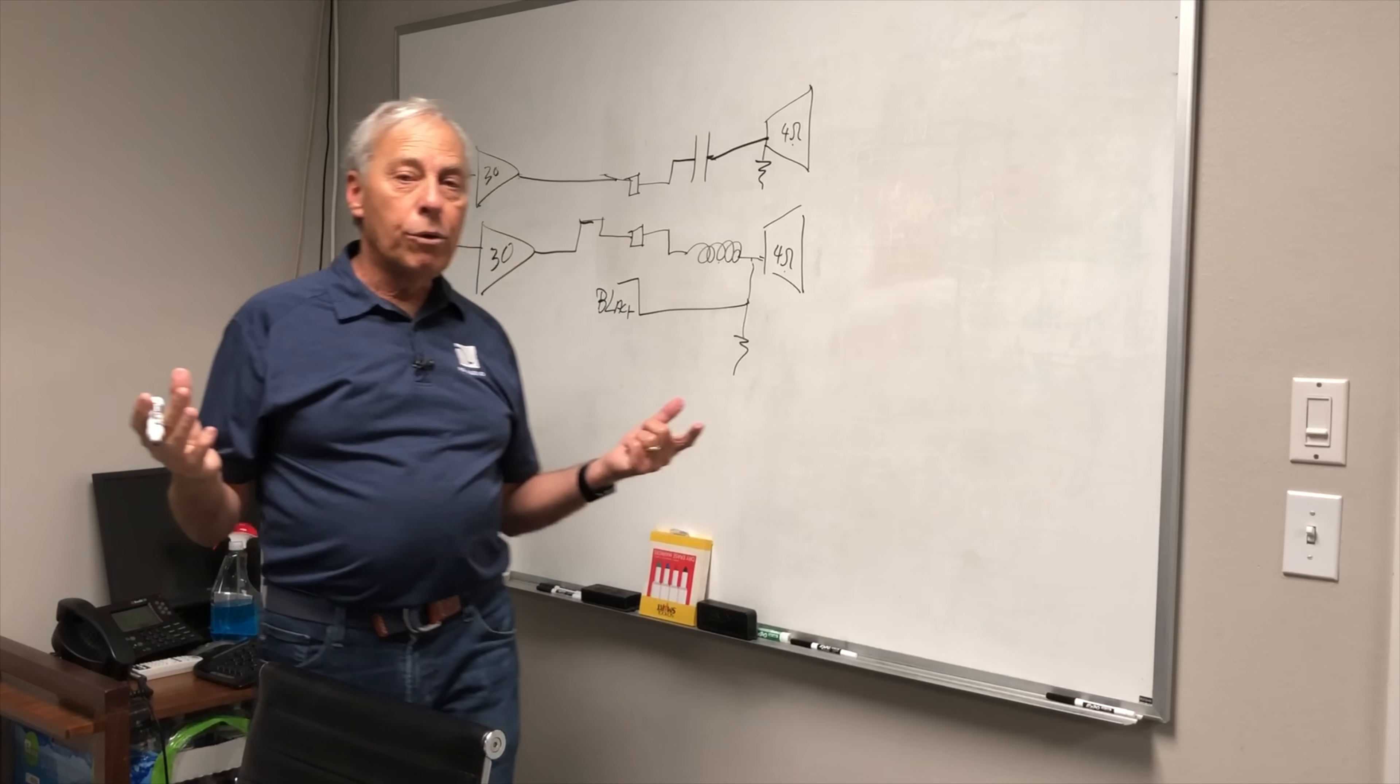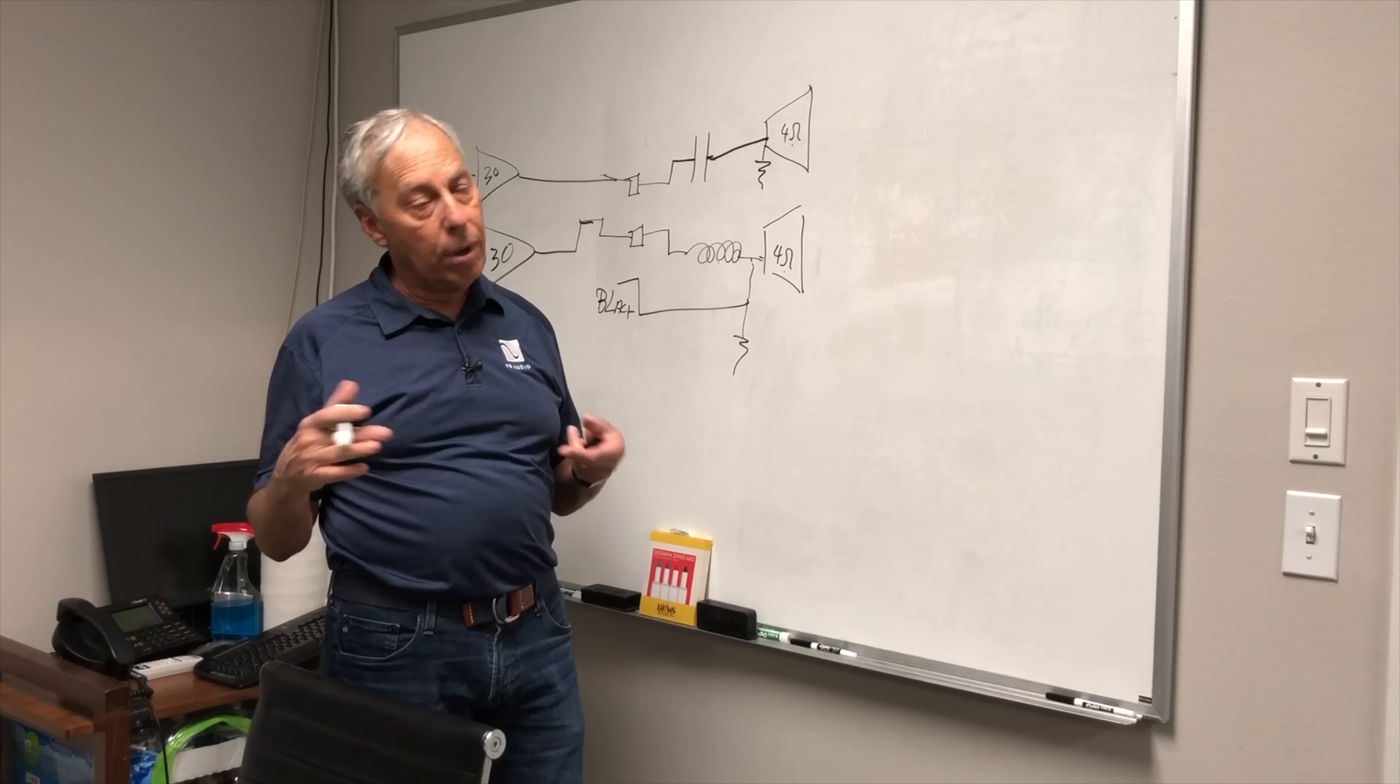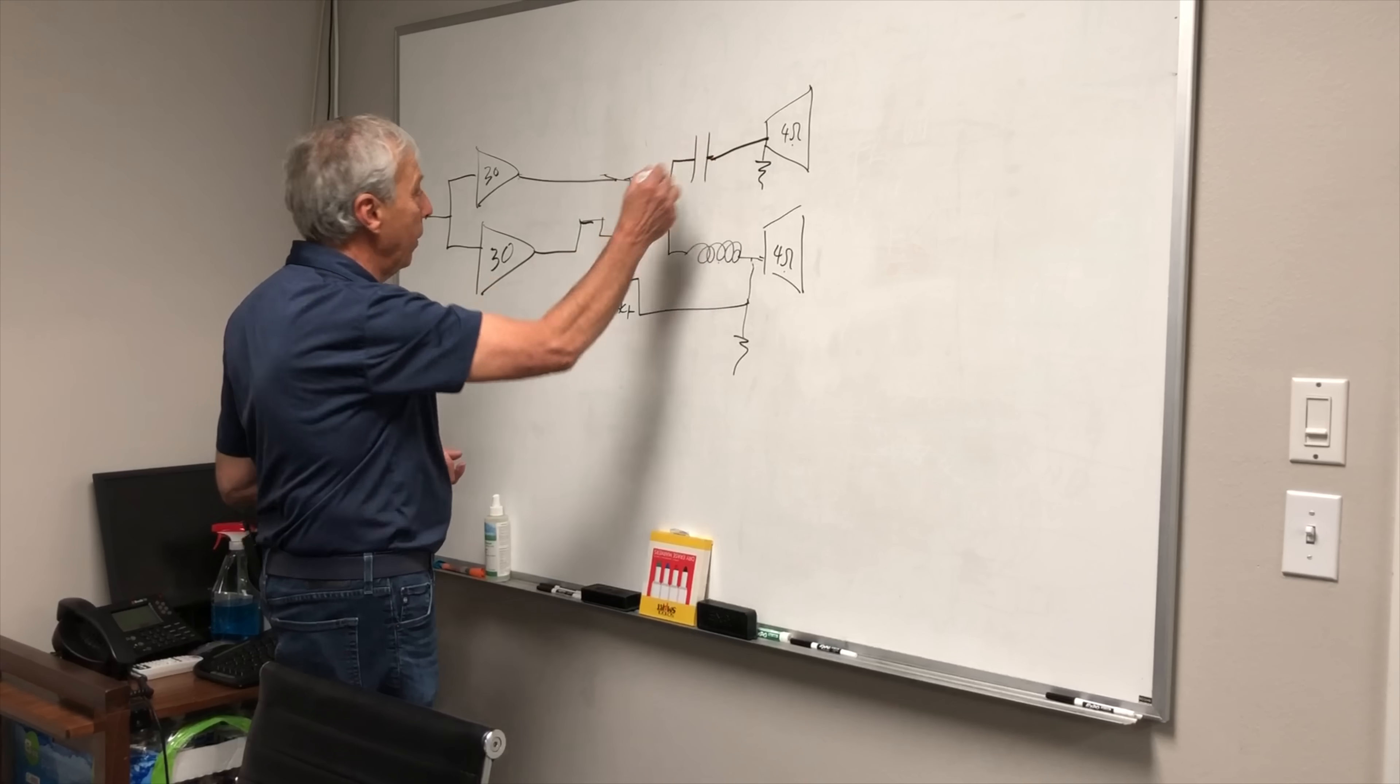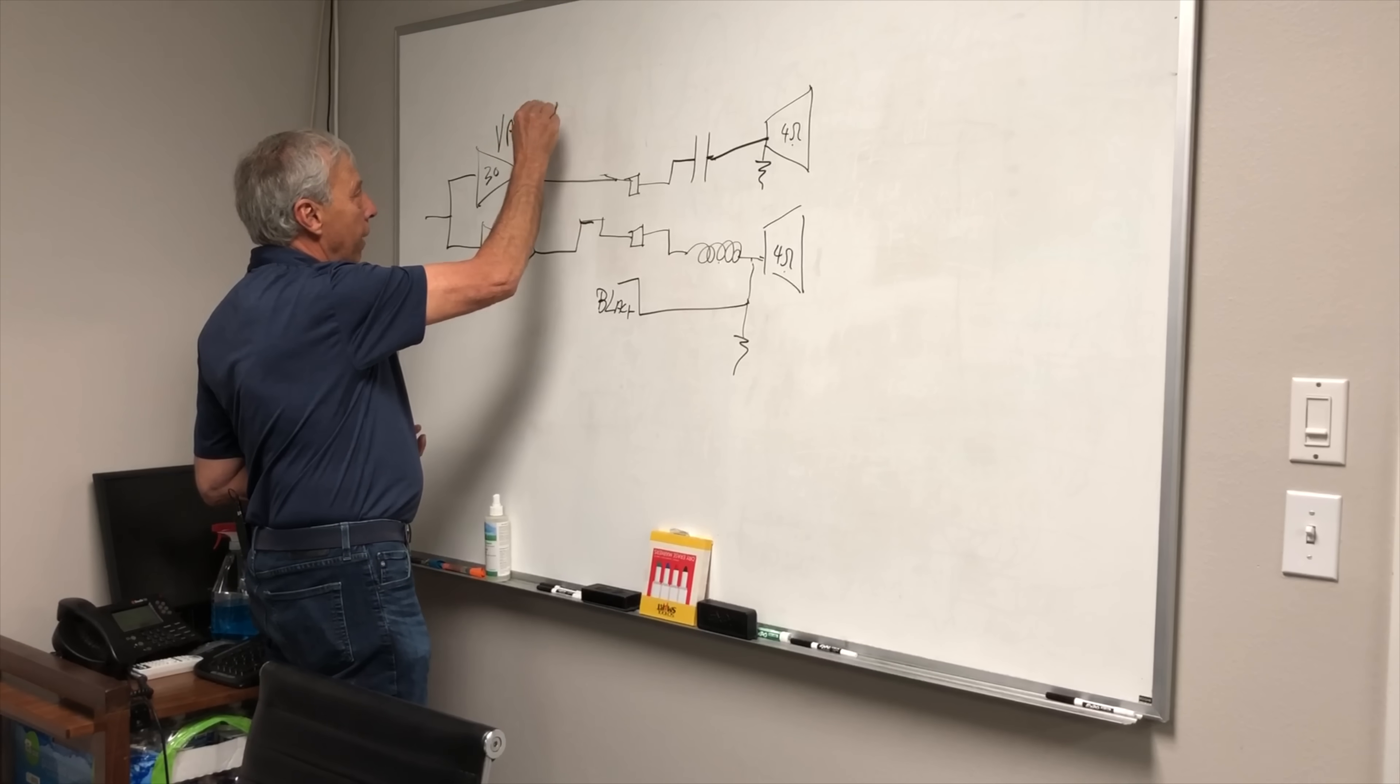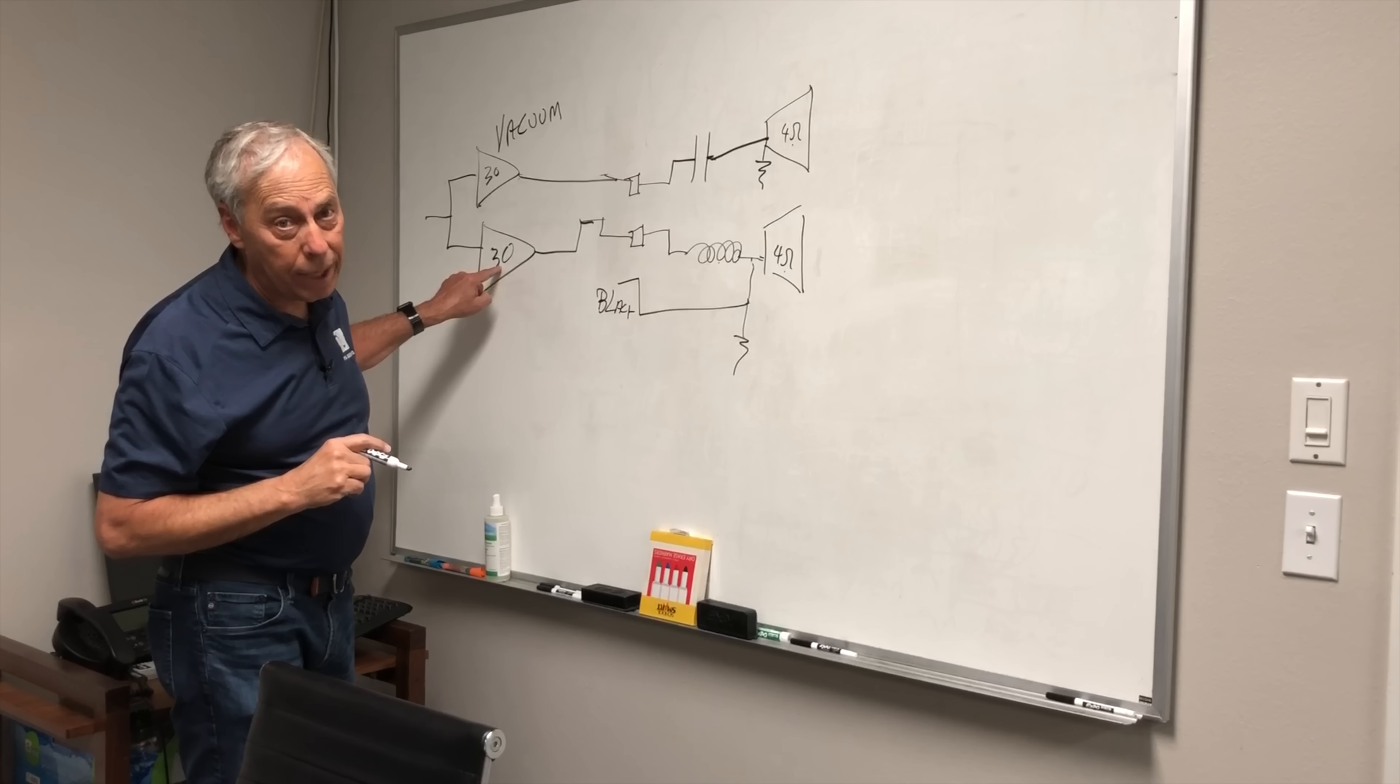Maybe you want to have vacuum tubes on the top end, because we like the sound of vacuum tubes on the top end, but we hate it for the bottom end, because vacuum tubes aren't great for woofers, but they are really nice for tweeters. So up here, we have our vacuum tube amp, there's our vacuum, and they don't have to have the same wattage, just the same gain.